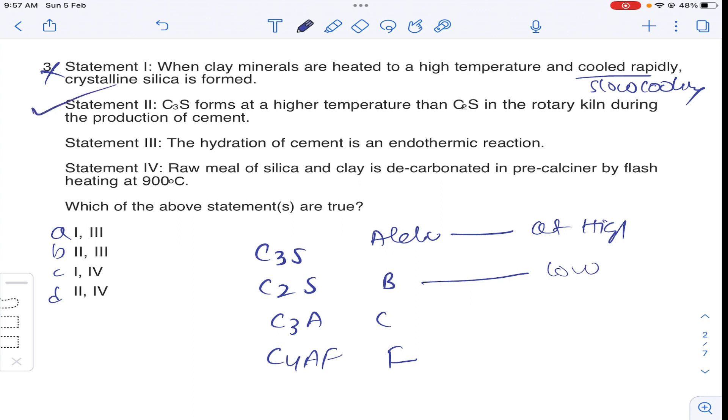Coming to third statement, hydration of cement is endothermic. It is not endothermic. It is exothermic. So that is hydration of cement is process of liberation of heat. So when heat is liberated, the type of reaction is called exothermic. Coming to statement 4, raw meal of silica and clay is decarbonated in pre-calciner by flash heating at 900 degree centigrade. During process of manufacturing of cement, both silica and clay are decarbonated by flash heating. So this is a correct statement.